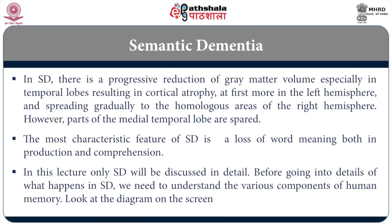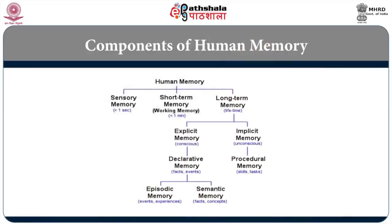Before going into the details of what exactly happens in semantic dementia, we need to understand the different components of human memory. Human memory has three major components: sensory memory, where information stays for less than a second; short-term memory, where information can stay up to about a minute; and long-term memory, where information can stay a lifetime.